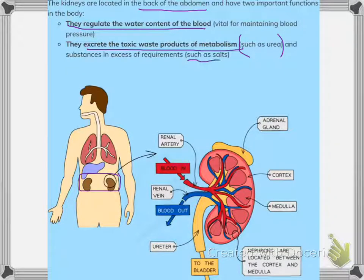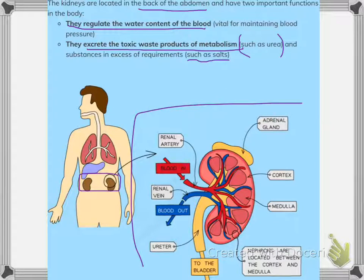These toxic waste products are urea and substances which are in excess of requirements — an example of excess requirements is salts. Now this is the diagram of a kidney, and here is the adrenal gland.